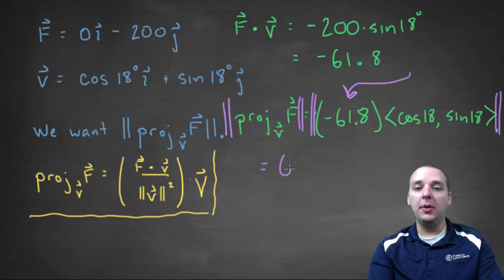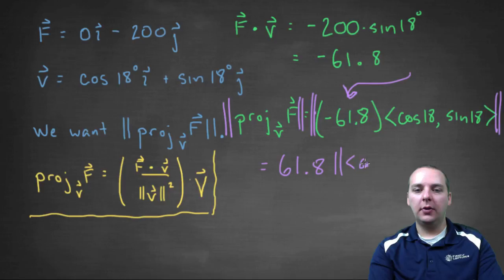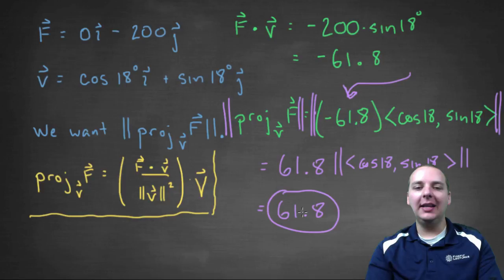We can pull the scalar outside the norm. It will be positive 61.8, because distance or magnitude or length is not negative. Then we'll have the magnitude of cosine 18 comma sine 18. But check this out. Cosine 18 comma sine 18 is a unit vector, which will have magnitude one. So we'll get 61.8.